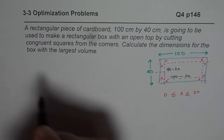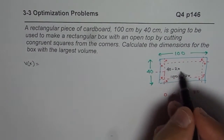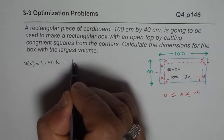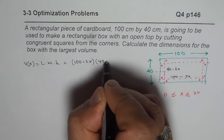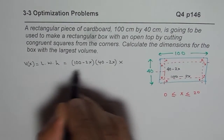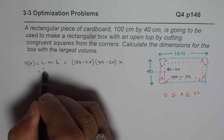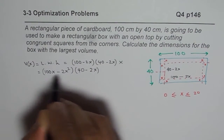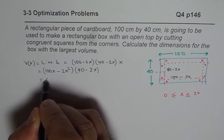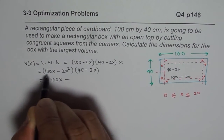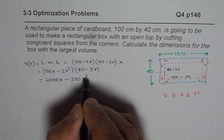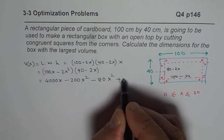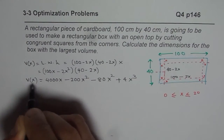Now we can write volume in terms of x, the one variable which we have here. Volume equals length times width times height. In this particular expression, length is 100 minus 2x, width is 40 minus 2x, and height is x. Multiplying by x first, we get 100x minus 2x squared, times 40 minus 2x. Opening the bracket: 40 times 100x gives 4000x, minus 200x squared, minus 80x squared, plus 4x cubed. That is the expression for volume in terms of x.